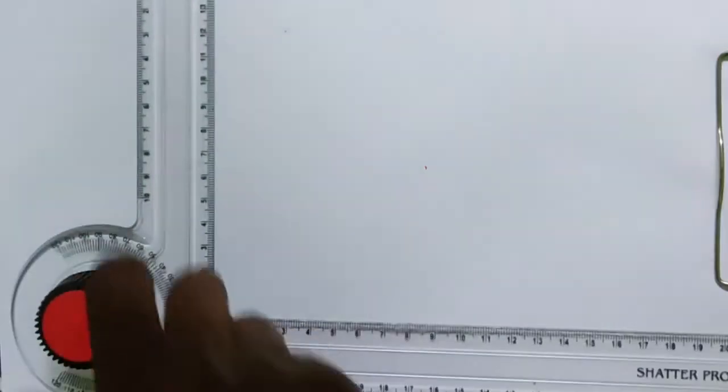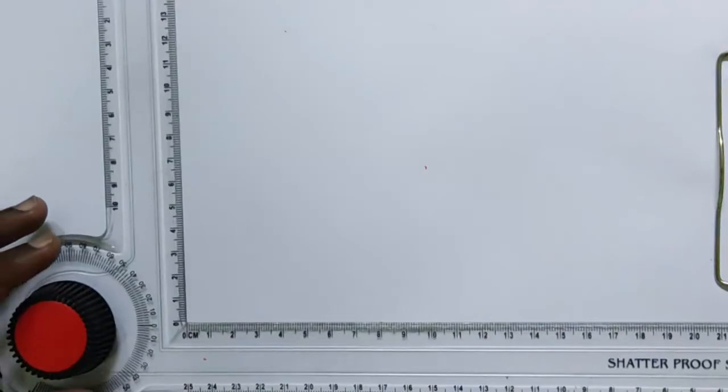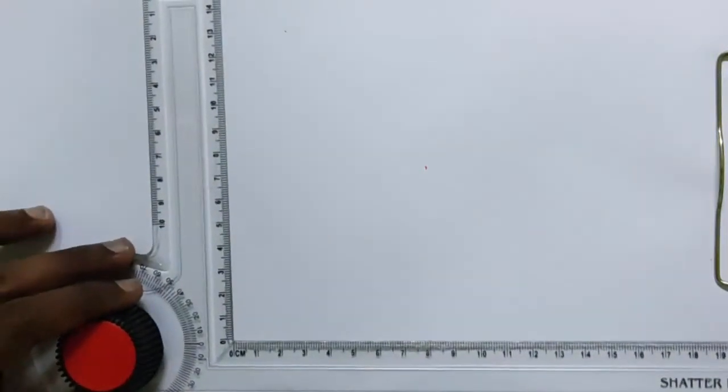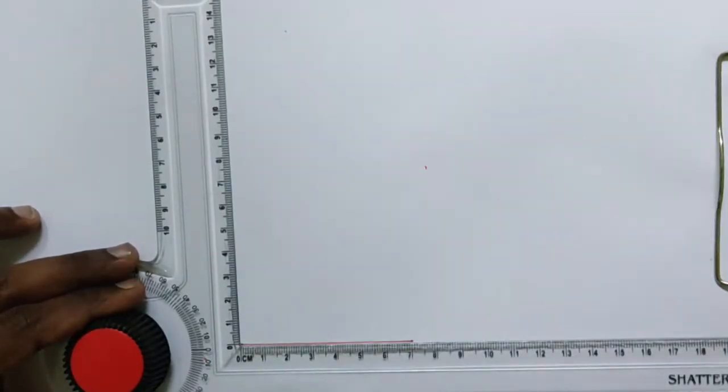Welcome guys. Now let us see how to draw a hexagon using a drafter by taking only one angle. Now I am drawing the first edge of that hexagon. I am taking 70 mm for demonstration purposes.